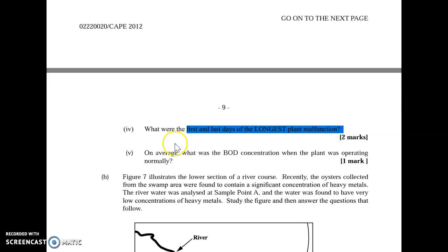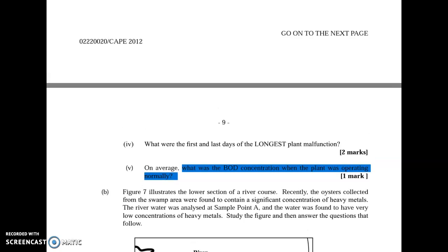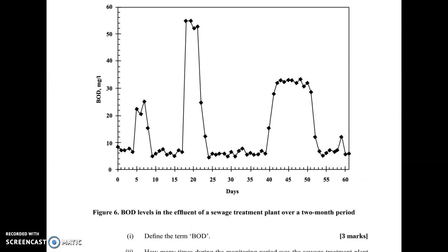On average, what was the biological oxygen demand concentration when the plant was operating normally? Take a ruler. If you use a ruler from this side all the way down to this side, you remember it is a range, it's not level. It will be an in-between value. Given the fact that they ask you to determine an average value, I would say approximately 8 milligrams per liter.